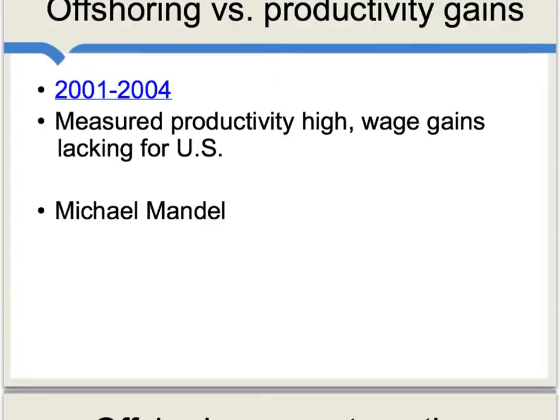Some commentators have wondered whether offshoring is the new way we're capturing productivity gains. For instance, in the years 2001 to 2004, measured productivity was relatively high, yet wage gains in the United States were lacking. One hypothesis put forward by Michael Mandel is that productivity increased through offshoring — doing things overseas for cheaper. That is a kind of productivity gain for American firms, but not a gain that rebounds to the benefit of American workers. In fact, it may lower their returns.